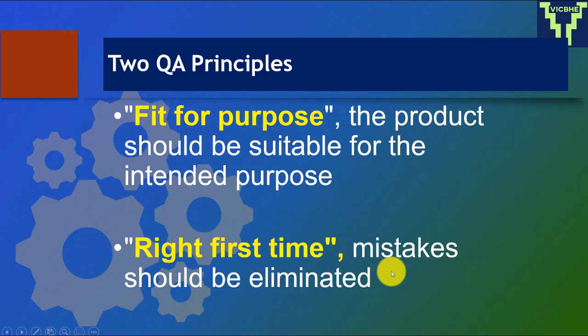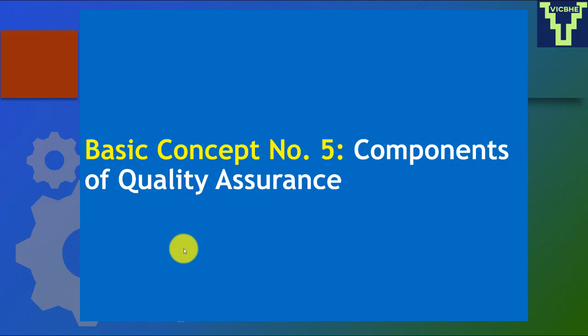There are two quality assurance principles you will encounter throughout your work: first, 'fit for purpose' — the product should be suitable for the intended purpose; and second, 'right first time' — mistakes should be eliminated from the outset.